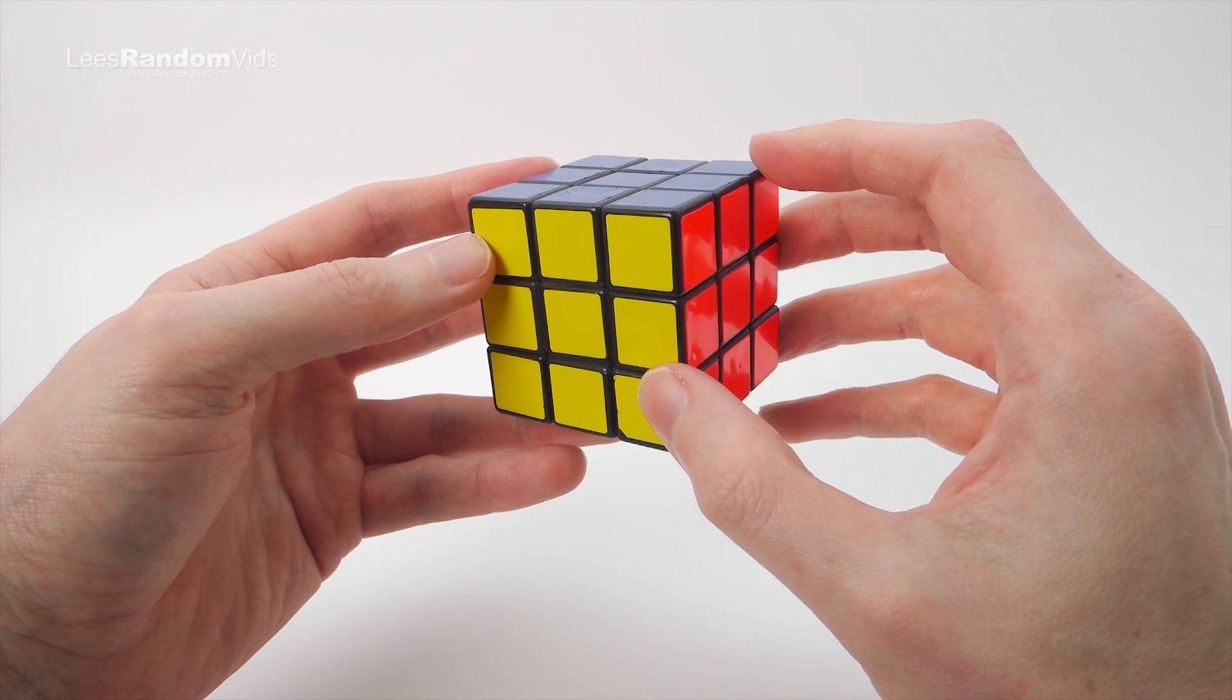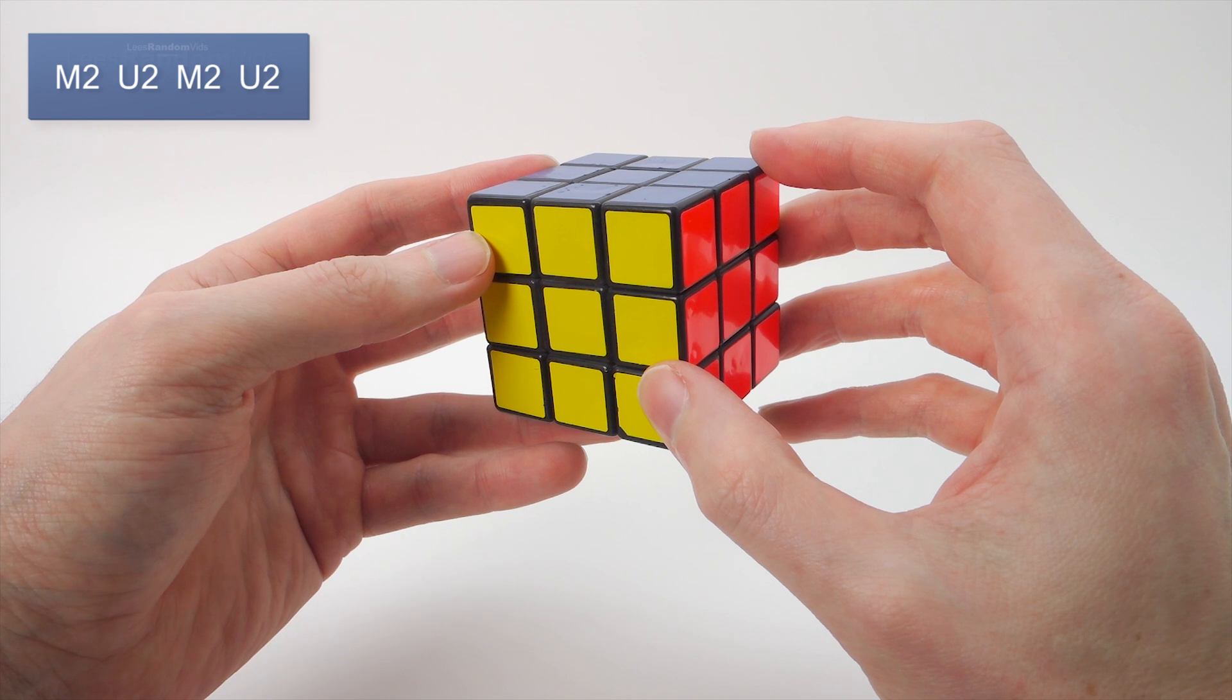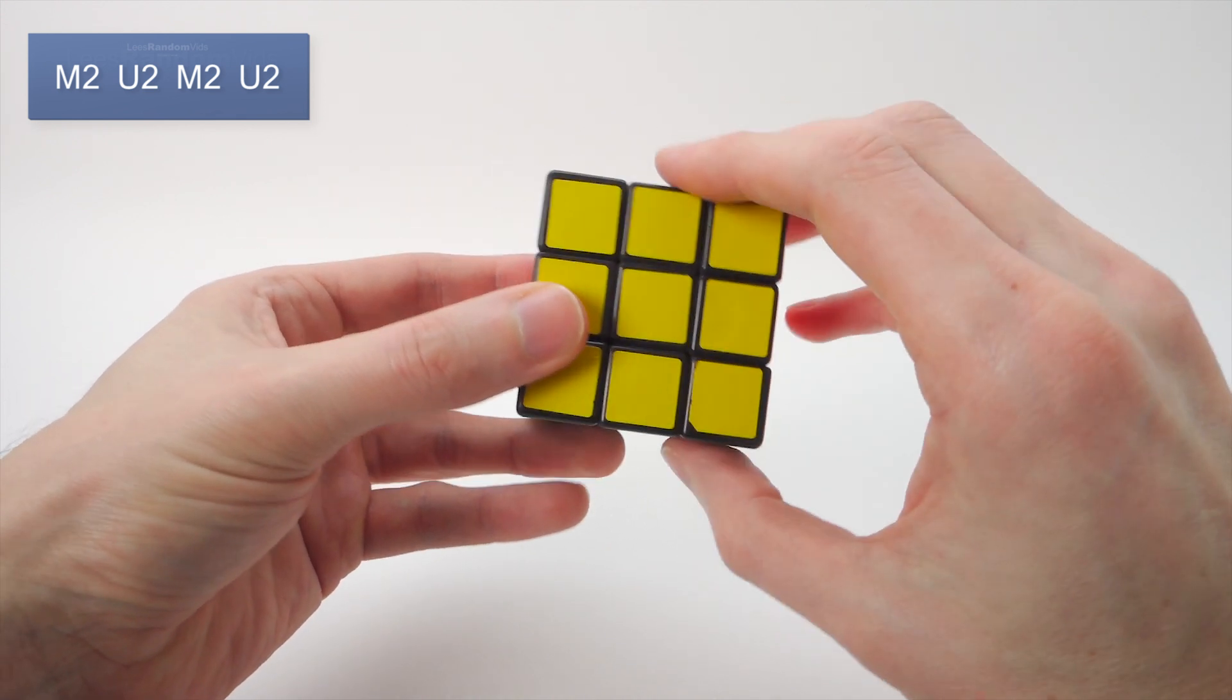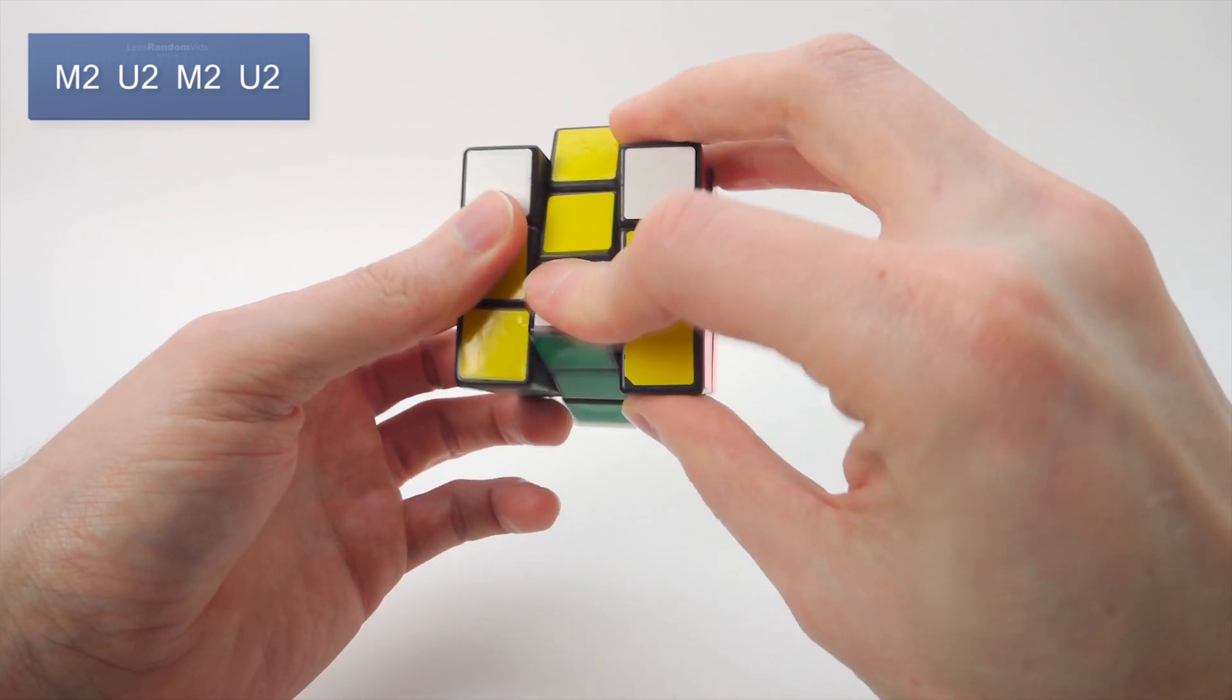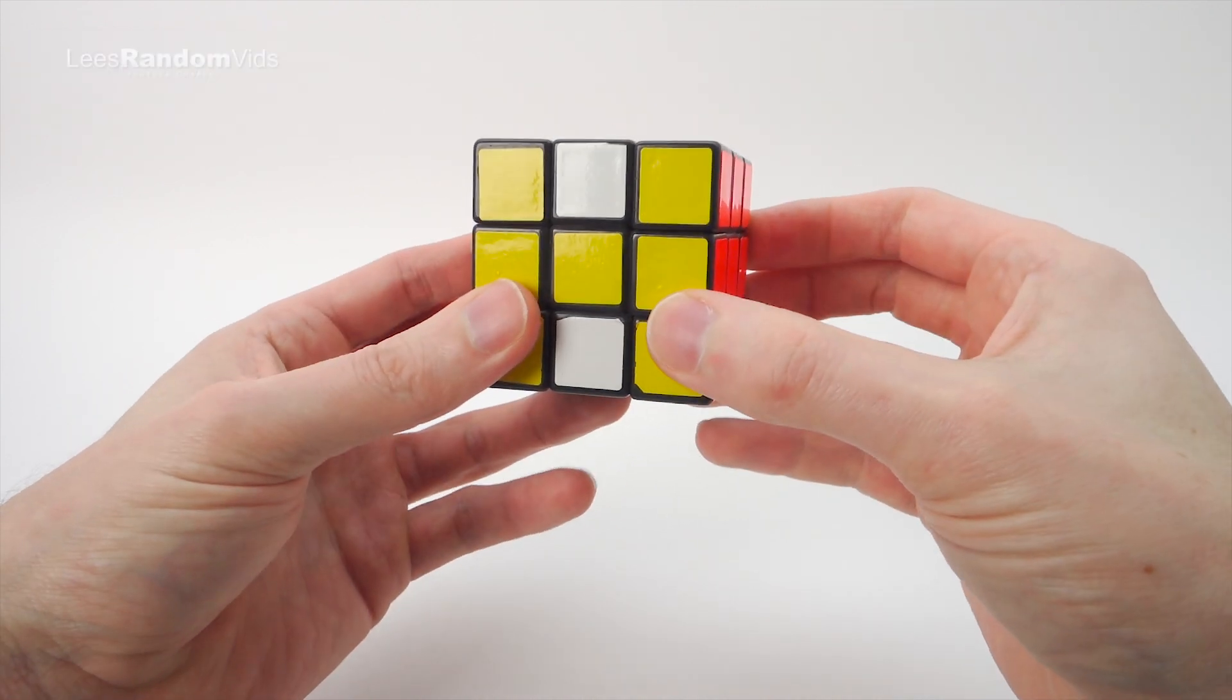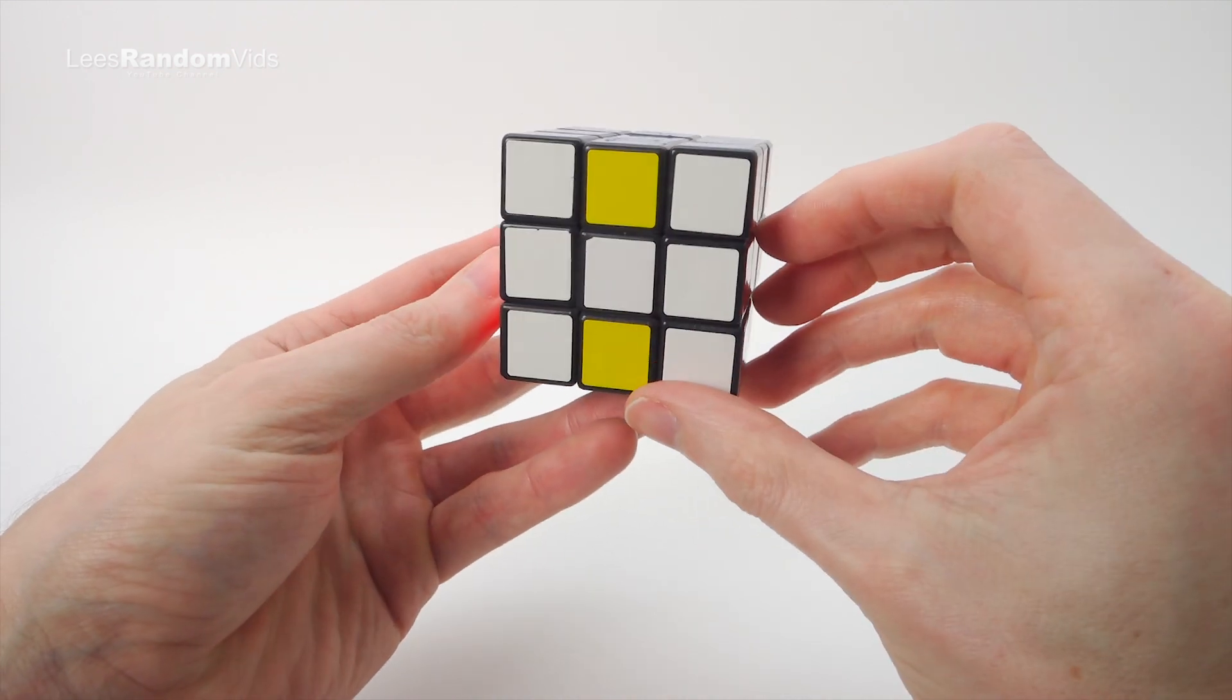So to do this pattern we just need to use a very simple algorithm, and that algorithm is M2 U2 M2 U2. So let's do that then. We go M2 U2 M2 U2, and that gives us the H on the front and the H on the back.